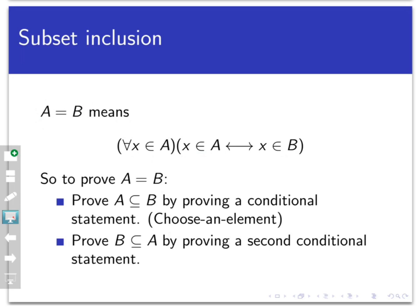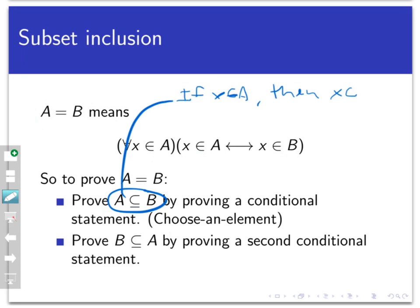This is going to be a two-stage proof. Proving that two sets are equal always happens in two parts. First, I need to prove that A is a subset of B by proving the conditional statement: if X is in A, then X is in B. We saw how to do that in the last video using the choose-an-element method — pick an element out of A at random and prove that X has the membership criterion for B as well.